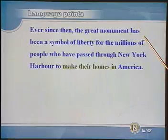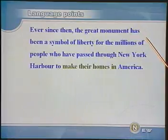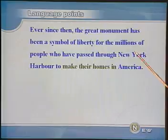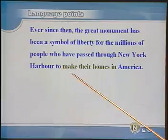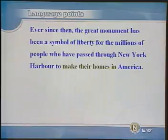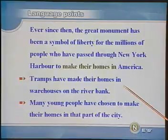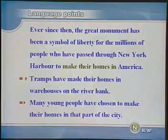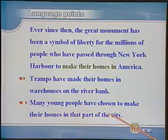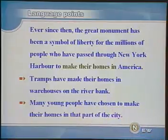现在我们来看第四个语言点：Ever since then, the great monument has been a symbol of liberty for the millions of people who have passed through New York Harbor to make their homes in America. 'Make their homes in' 这个词组的意思是在什么地方安家。再请看两个例句：Tramps have made their homes in warehouses on the river bank. 流浪汉们以河岸上的仓库为家。Many young people have chosen to make their homes in that part of the city. 许多年轻人选择在城市的那个地区安家落户。